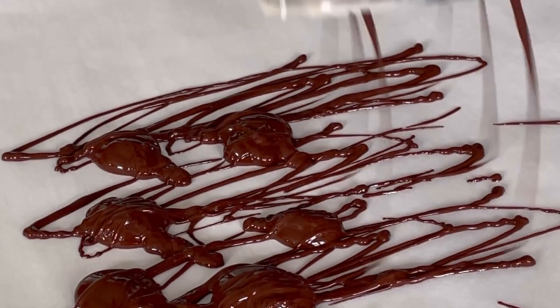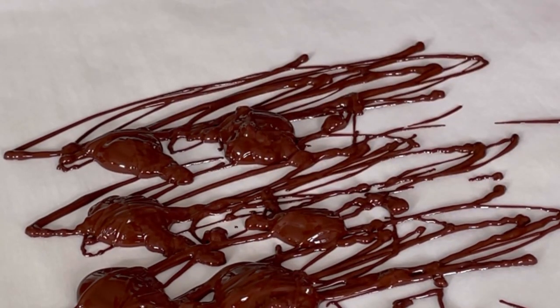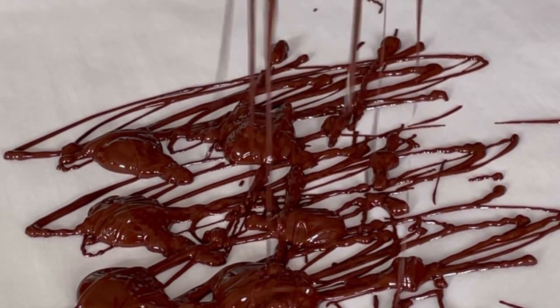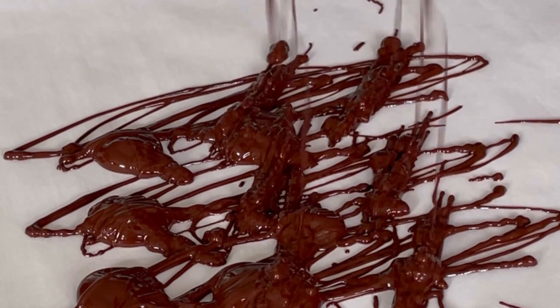Turn your mold over, and all the excess chocolate will just fall right out. Once you clean off the surface of the mold, place it in the refrigerator for 15 to 45 minutes to set.